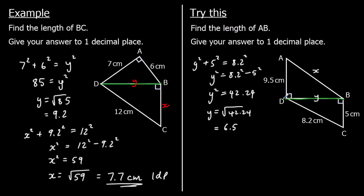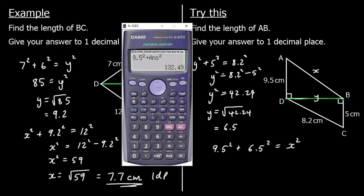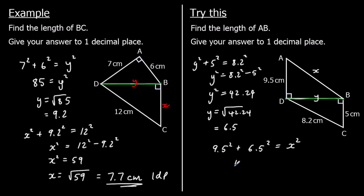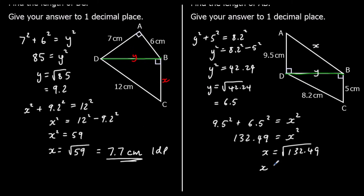Then for the second triangle — the top triangle — we're working out the hypotenuse. So 9.5 squared plus 6.5 squared equals x squared. 9.5 squared plus the answer squared gives 132.49, so x squared equals 132.49. Square rooting both sides, to one decimal place we've got 11.5. So x is 11.5 centimeters to one decimal place.